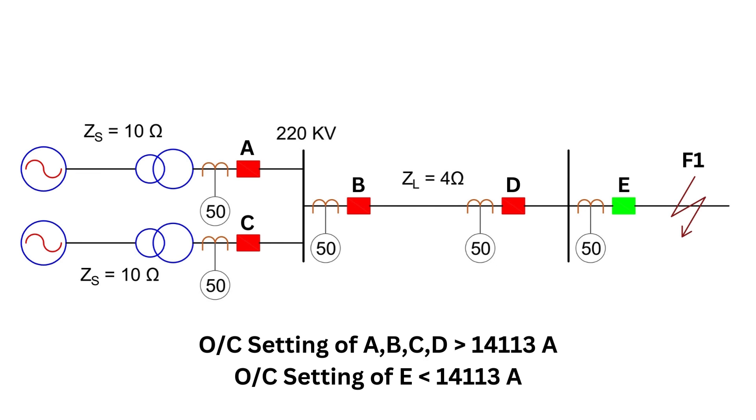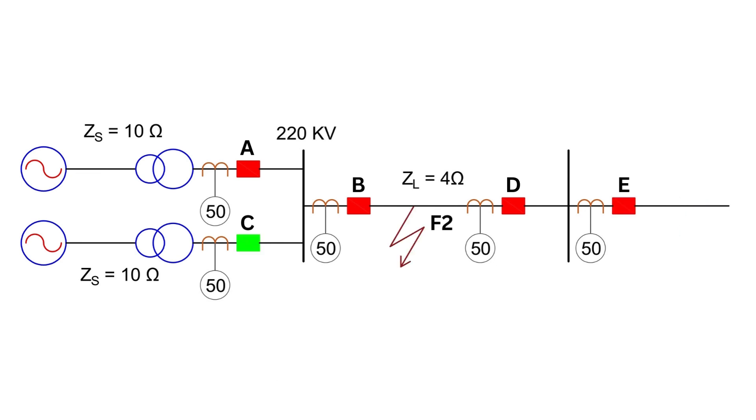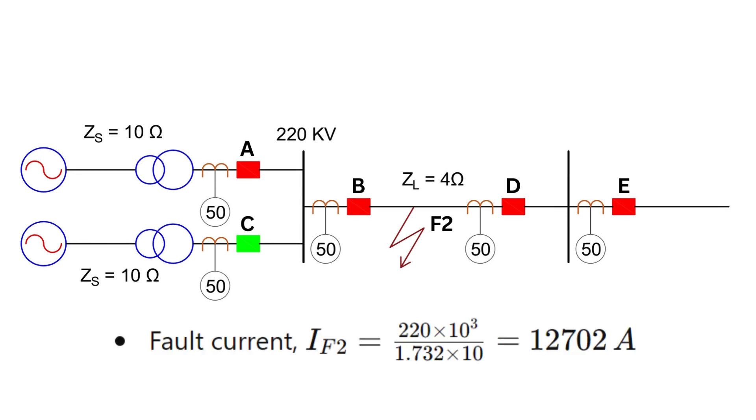Now, let's look at a different scenario. Let's say the fault happens inside the switch yard at point F2, with only one power source feeding the network. The fault current at F2 will now be IF2 = 220 × 10³ / √3 × 10, which is equal to 12,702 amperes.